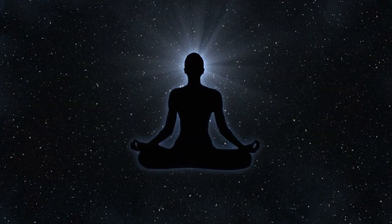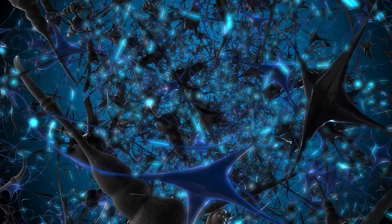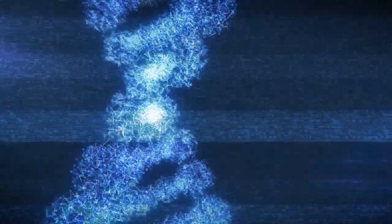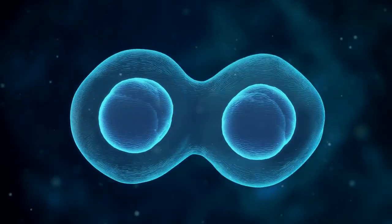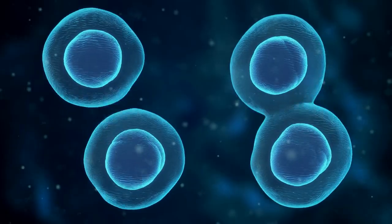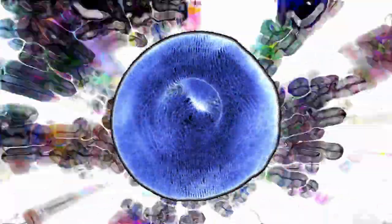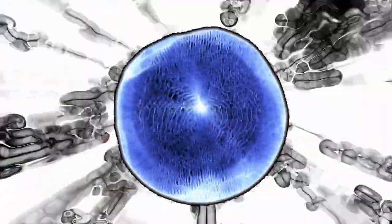This is absolutely true, but then how come in Biology of Belief I talk about our mind and our perception controlling our genetics? If a cell is out in the environment, consider an amoeba moving through the environment. Indeed, all environmental influences are now going to affect the behavior and activity of that cell.